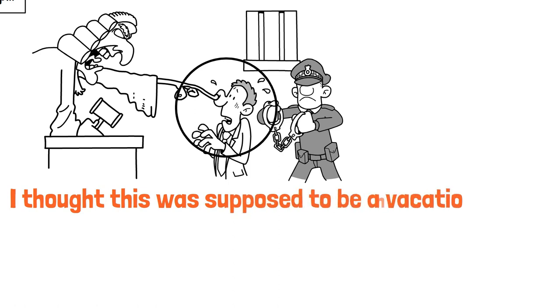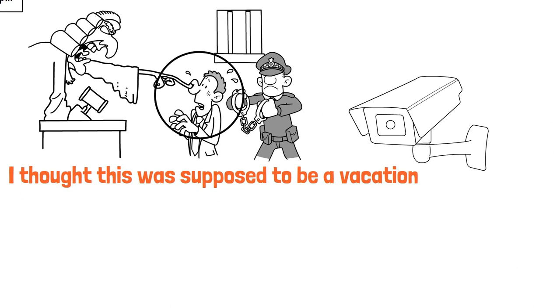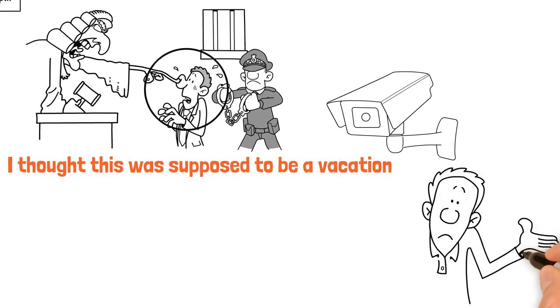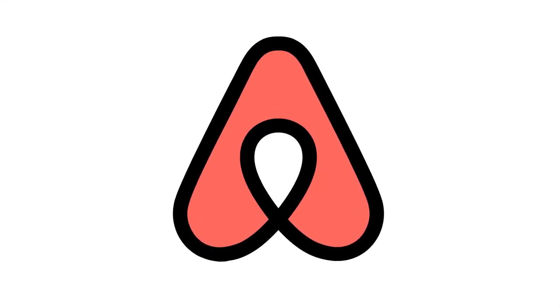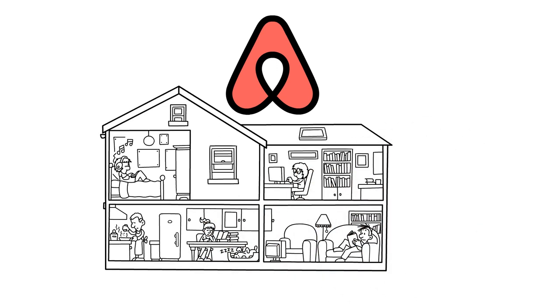And let's not forget about the hosts who spy on their guests with hidden cameras. That's a whole other level of creepy. But how did we get here? Well, let's take a trip down memory lane. When Airbnb first started, it was a game changer. You could stay in someone's home for a fraction of the cost of a hotel and experience the city like a local. It was a win-win.